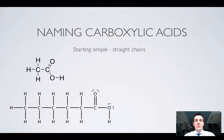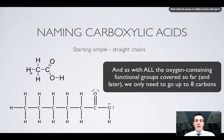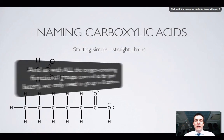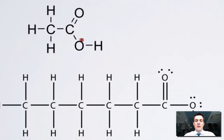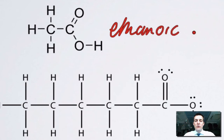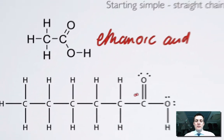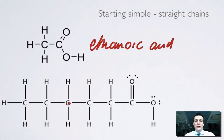Naming carboxylic acids should be quite a simple affair, because we've used these prefixes many times before. We just need to spot how many carbons there are, and we only need to do this for straight chains — no branched examples needed. We've got two carbons here and a carboxylic acid functional group, so this is ethan- for two carbons, and all carboxylic acids end in -oic acid. So that's ethanoic acid. Here's a carboxylic acid with 6 carbons and a carboxylic acid functional group at the end, so this is hexanoic acid.